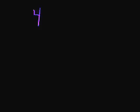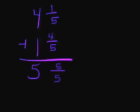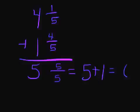Let's try 4 and 1 fifth plus 1 and 4 fifths. I'm going to first look at my whole numbers, 4 and 1. I look at my denominators and I notice they're the same, so that means I can add my numerators. First I'm going to add 4 plus 1 and I get 5. And then I'm going to add 1 plus 4 and I also get 5. So my answer here is 5 and 5 fifths. I need to simplify the 5 fifths. Whenever we see the same numerator over the same denominator, we know it's going to be equal to 1 whole. So this is equal to 5 plus 1, which is 6.